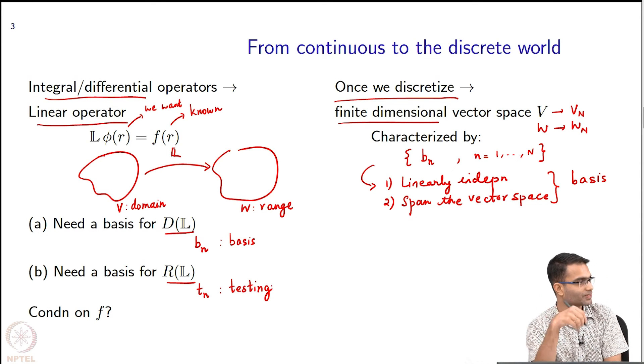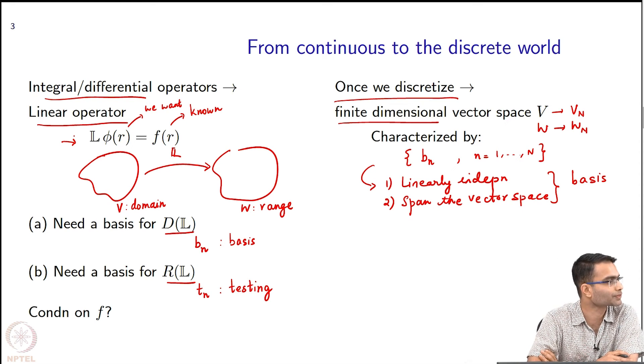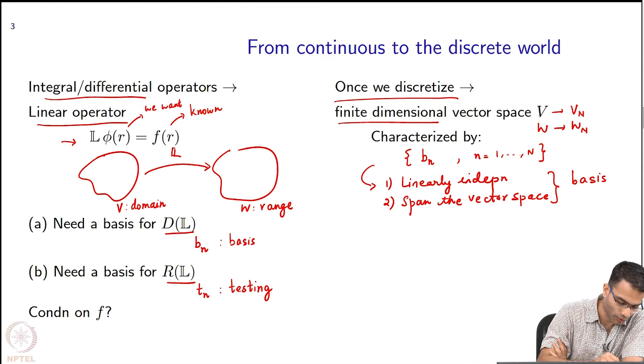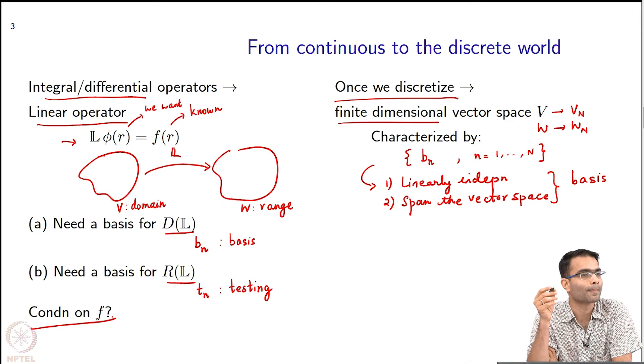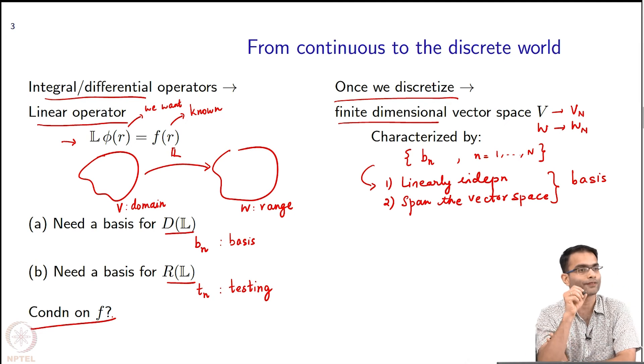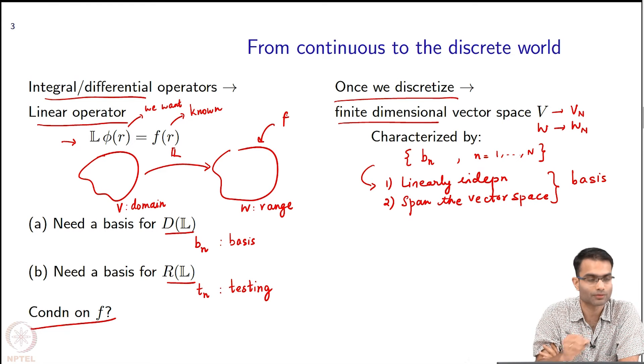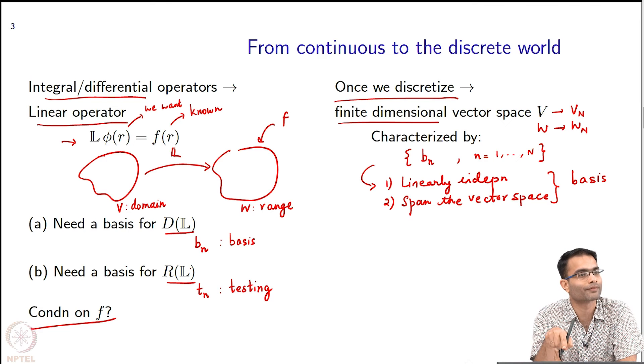So it will become clear as we go why these letters or words, basis and testing. In order for us to solve this equation, if I just go back to the original equation over here and I say give me a solution to this, so very beginning of linear algebra, what do you say should be a condition on f for you to be able to solve this equation? The range, right? So if I am going to be able to solve this equation, f should be inside this range. Otherwise, there is no way that L will map anything and get me f.